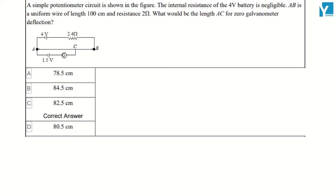A simple potentiometer circuit is shown in the figure. The internal resistance of the 4 volt battery is negligible. AB is a uniform wire of length 100 cm and resistance 2 ohms. What would be the length AC for zero galvanometer deflection?